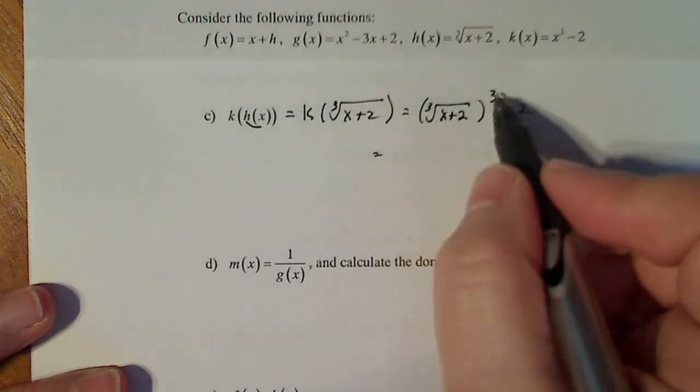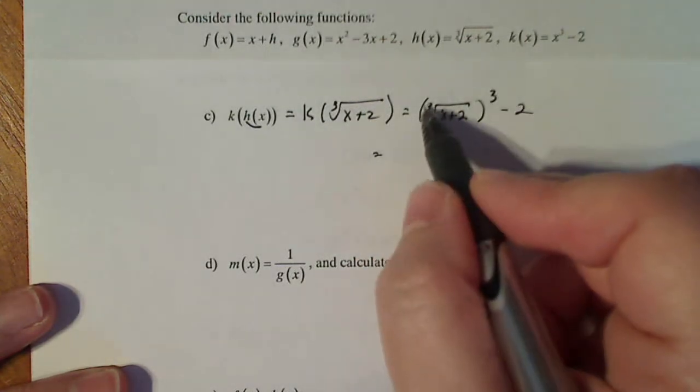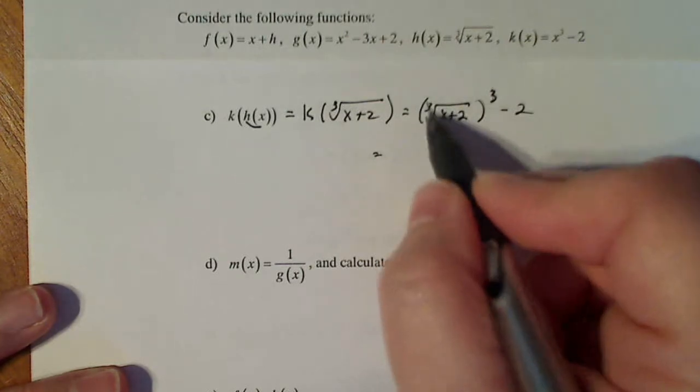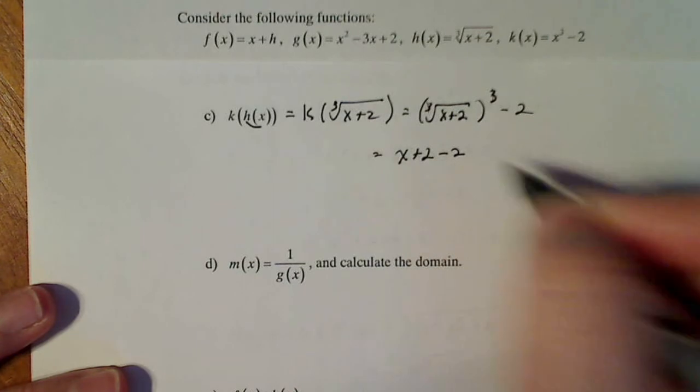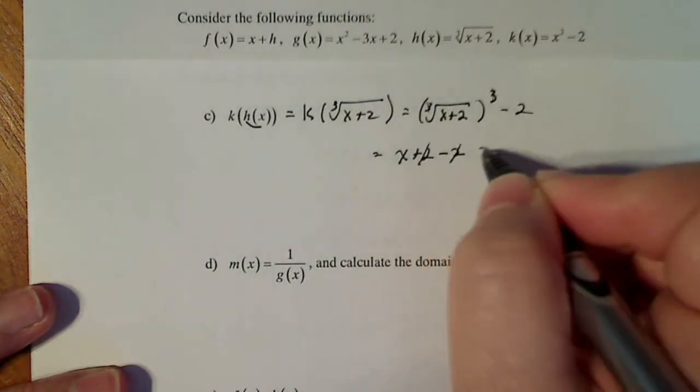The cube root cubed annihilates the powers, so I'm left with X plus 2 minus 2. The twos cancel and I'm left with X.